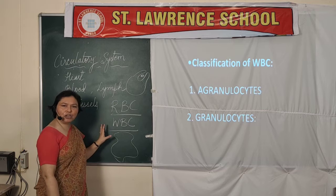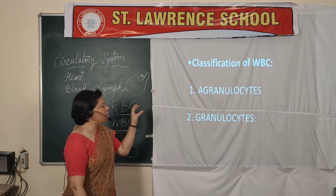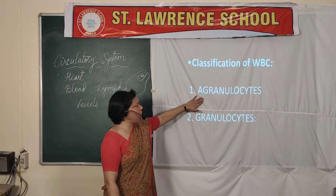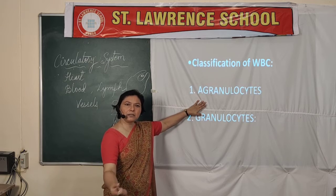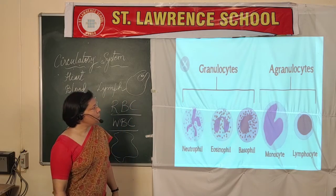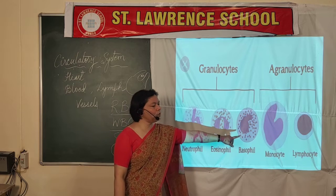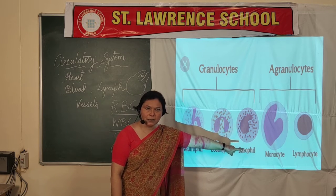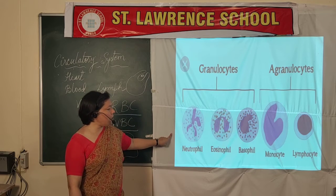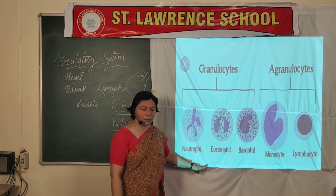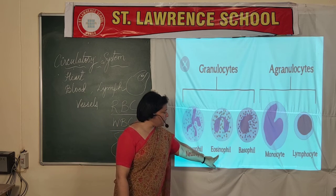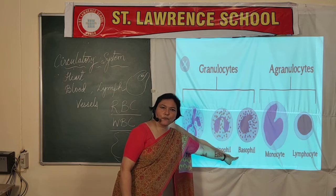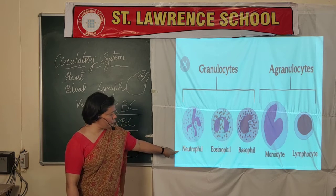Now we come to the classification of WBCs, which makes two sections: agranulocytes and granulocytes. Agranulocytes are of two types: monocyte and lymphocyte. Granulocytes are of three types: eosinophil, also known as acidophil, basophil, and neutrophil.